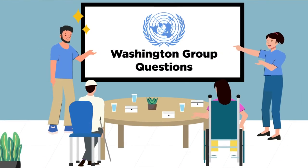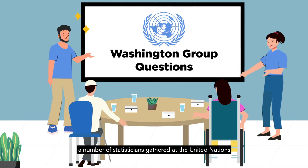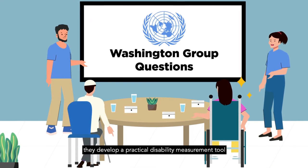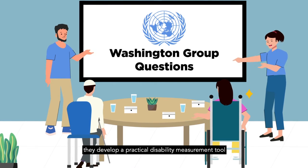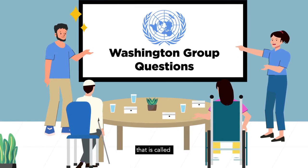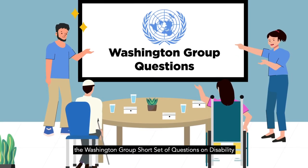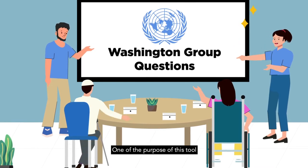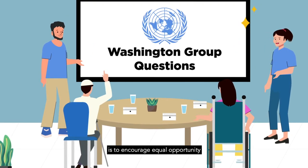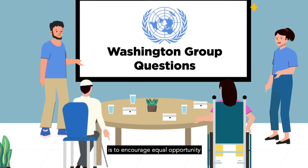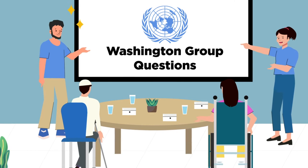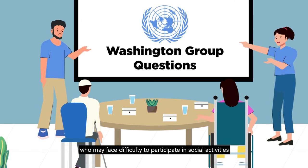In 2001, a number of study stations gathered at the United Nations. Together, they developed a practical disability measurement tool called the Washington Group Short Set of Questions on Disability. One of the purposes of this tool is to encourage equal opportunity, especially for people with disabilities who may face difficulty participating in social activities.